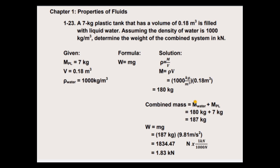So in solving the mass of the water, in the formula density equals mass over volume, cross multiply, we have mass equals density times the volume. Plug in the value of the density of water, 1000 kilogram per cubic meter times 0.18 cubic meter.